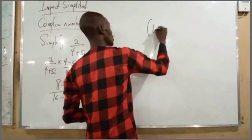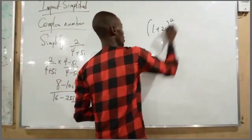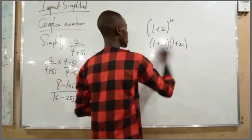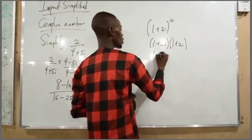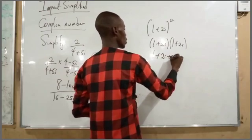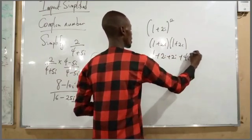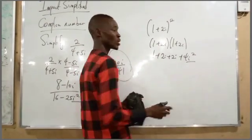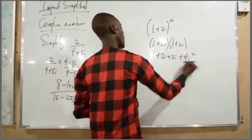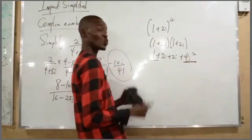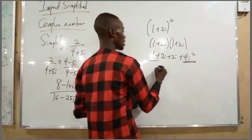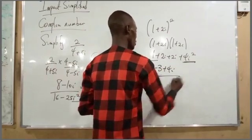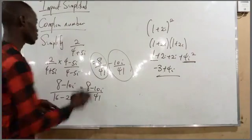Now let's look at squaring a complex number: (1 + 2i)². That equals (1 + 2i)(1 + 2i). Expanding: 1 plus 2i plus 2i plus 4i². Since i² equals minus 1, 4i² equals minus 4. So 1 minus 4 gives minus 3, and 2i plus 2i gives plus 4i. The result is minus 3 plus 4i.